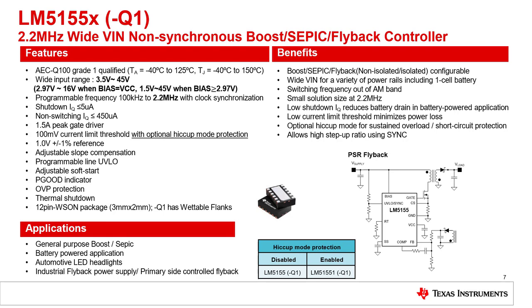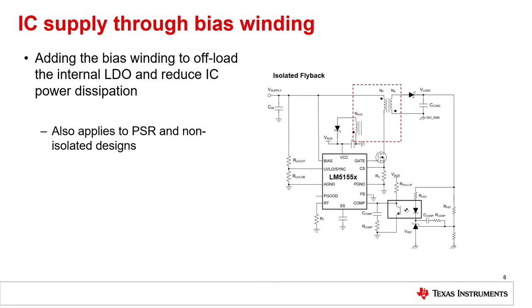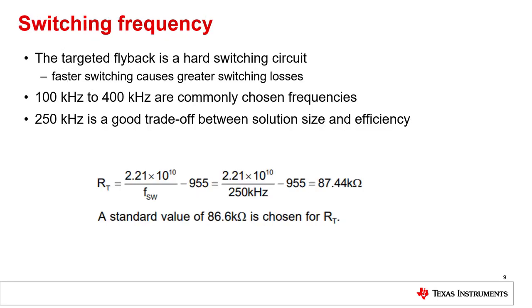As we are using LM5155 for this design, the features and benefits as well as some application examples can be seen on this slide. The device has a voltage rating of 45V. As this is a controller, this voltage rating is sufficient since the IC is not exposed to the voltage reflected from the output — the MOSFET needs the high voltage rating. We want to supply the IC from a 10V auxiliary supply to reduce power dissipation. This can easily be achieved with a bias winding on the transformer, which can be used in any of the three flyback types shown. In a PSR flyback, the bias winding can be the regulated primary winding.